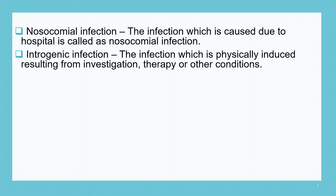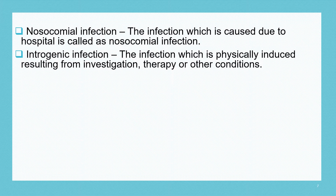Seventh is iatrogenic infection. The infection which is physically induced resulting from investigation, therapy, or other medical conditions is called iatrogenic infection. For example, if a person goes for a blood test during a checkup and gets infected during that investigative procedure, or if a patient gets infected during an ongoing therapy, that infection is called iatrogenic infection.